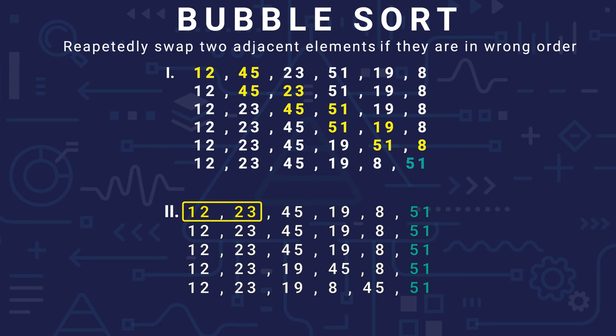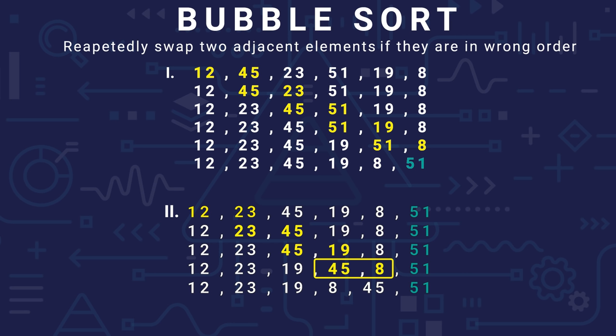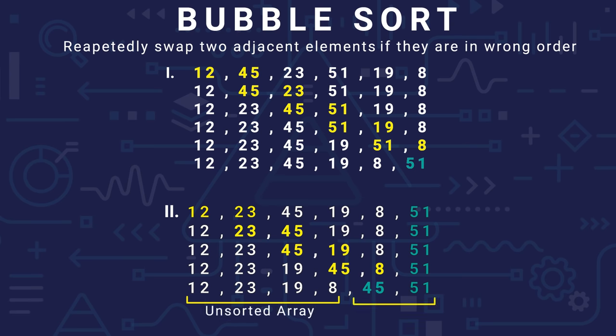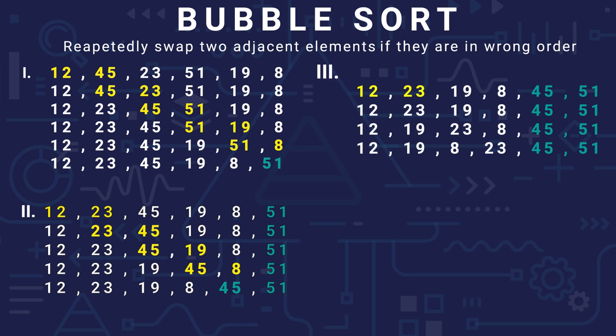In the second pass, we compare 12 and 23 — right order, do nothing. Compare 23 and 45 — right order. Compare 45 and 19 — wrong order, so we swap. Compare 45 and 8 — wrong order, swap. We've now reached the position before 51, so we don't need to compare any further.